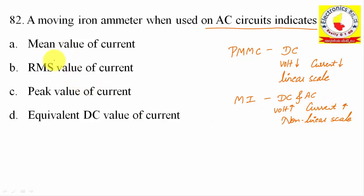The moving iron ammeter measures mean value, RMS value, or peak value. The peak value can be considered equivalent to a DC value. However, the correct answer is the RMS (root mean square) value of current. So option B is correct.